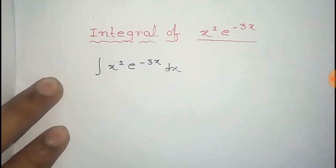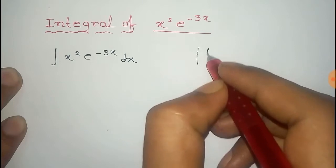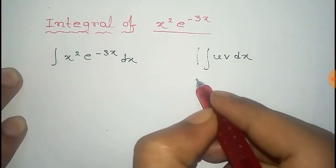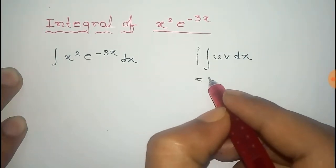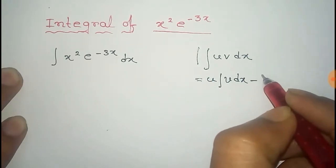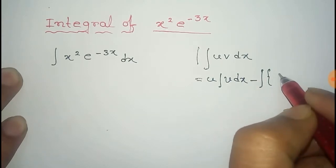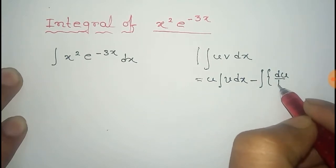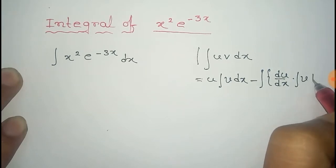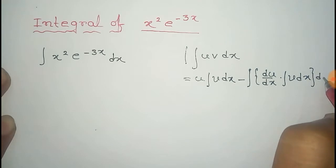For this, we use the formula of integral u v dx, where u and v are both functions of x. This is given by u times the integral of v dx, minus the total integral of the derivative of u into the integral of v dx, into dx.